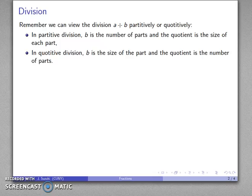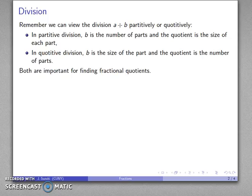On the other hand, if I'm looking at this as a quotitive division, the divisor B is the size of each part and the quotient is the number of parts. Both of these interpretations of division are important for finding fractional quotients.